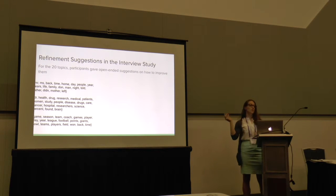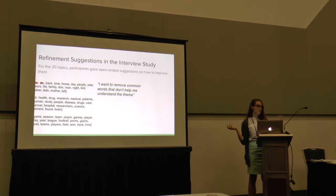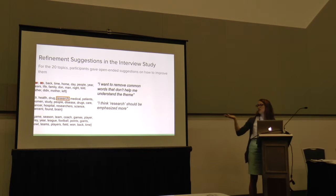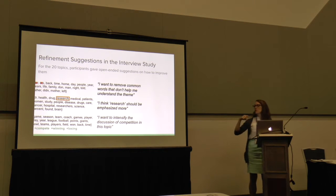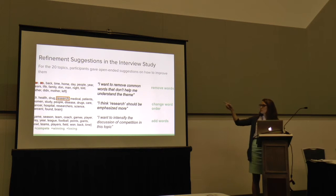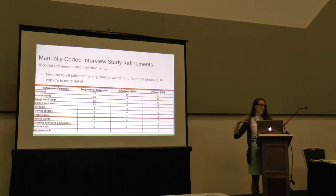We then looked at what refinements users would suggest without biasing them by what was possible. For example, one user wanted to remove words like Mr. and Miss because they didn't help understand the theme. Another wanted to emphasize the word 'research' in a topic. Another wanted to add words to intensify a theme of competition. From 10 interview participants, we coded all refinements into 11 categories. We took the top six — including combining merge words and connect phrases — and studied them in more detail in a crowdsource study.